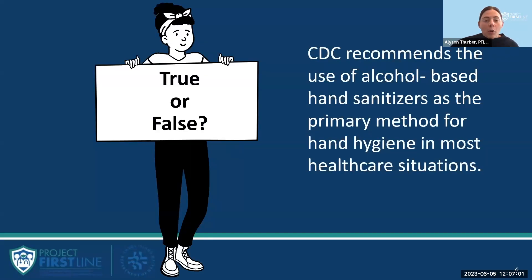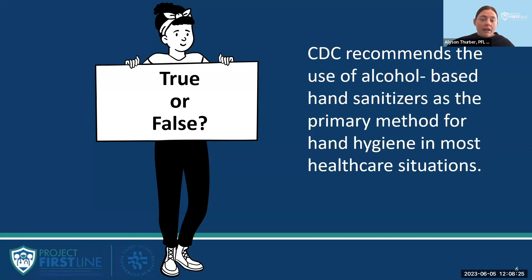We will start with a poll question. CDC recommends the use of alcohol-based hand sanitizers as the primary method for hand hygiene in most healthcare situations — true or false? Hand rubs are generally less irritating to your hands and are an effective method of cleaning your hands, but there are certain times when hand washing should be used instead, and we will discuss that next.